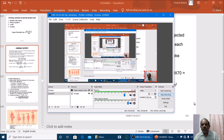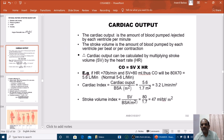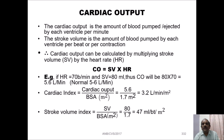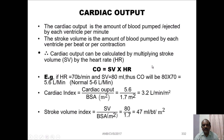Friends, today I am going to present a short tutorial on cardiac output. The cardiac output is the amount of blood pumped or ejected by each ventricle per beat. The stroke volume is the amount of blood pumped by each ventricle per beat or per contraction. Hence, cardiac output can be calculated by multiplying stroke volume by the heart rate.